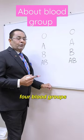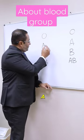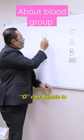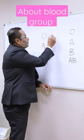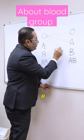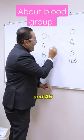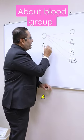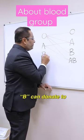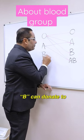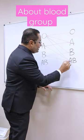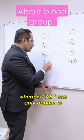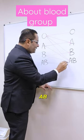So we have four blood groups: O, A, B, and AB. O can donate to O, A, B, and AB. A can donate to A and AB. B can donate to B and AB. Whereas AB can only donate to AB.